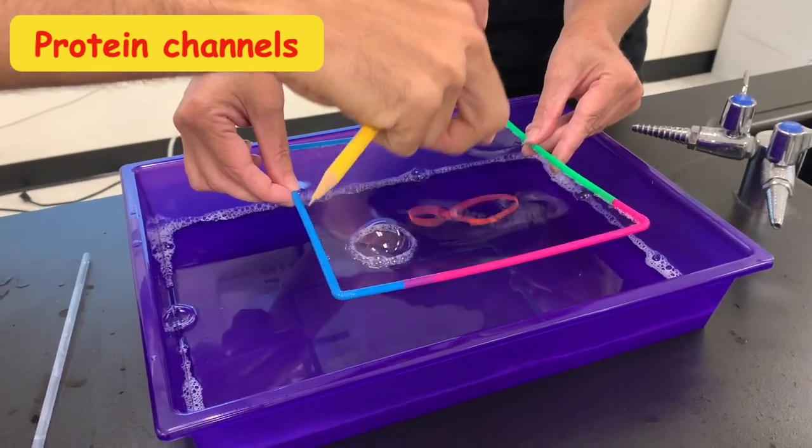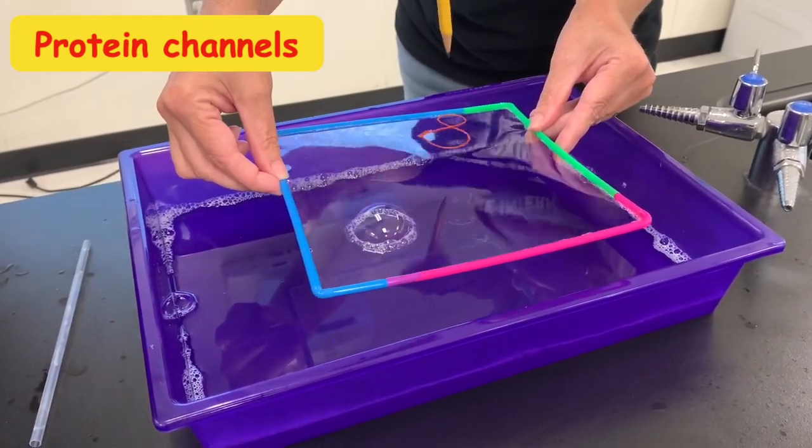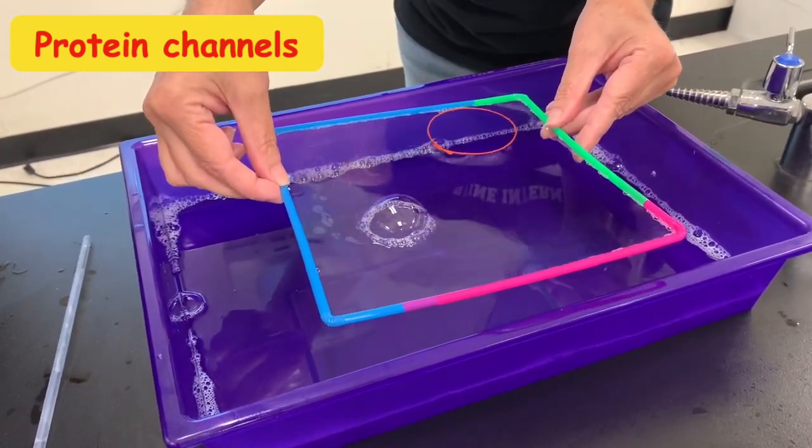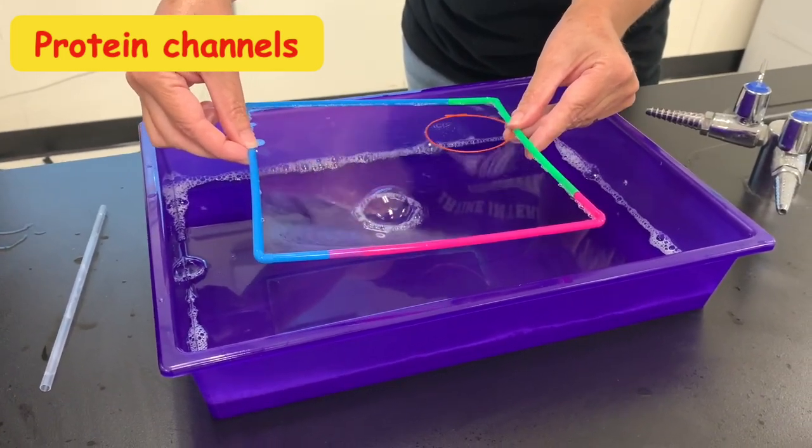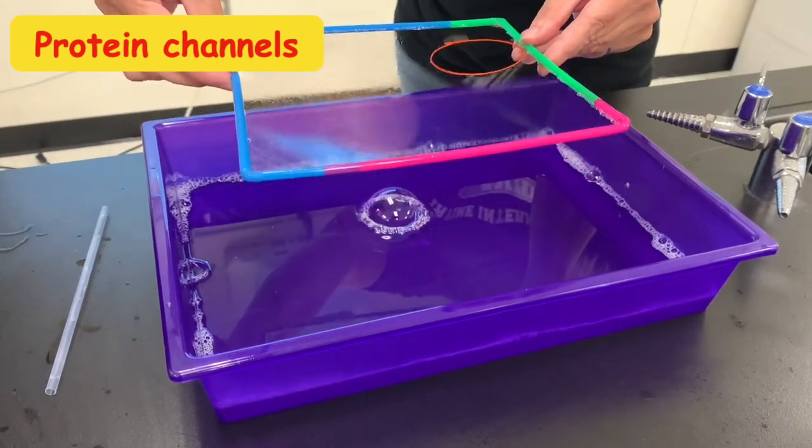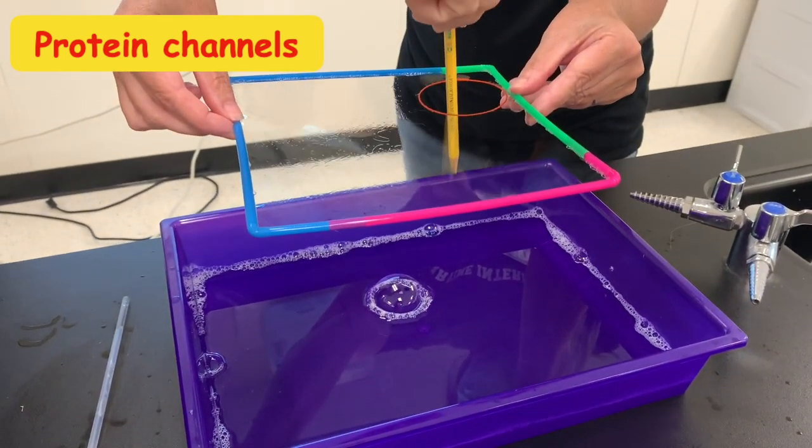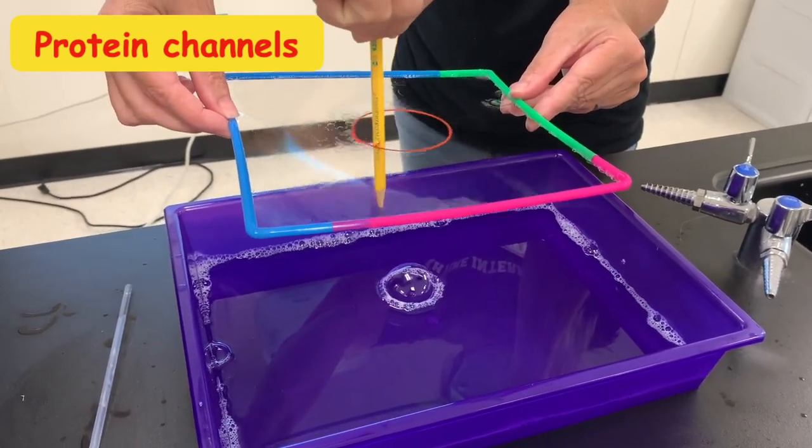I always like to save the protein channels ones for last because this is my all-time favorite. So if you use that circle that you made out of string and put it on the surface of the membrane, you can see if you poke it with a pencil, it can just float around as an open circle or like a protein channel that allows passage of material into or out of the cell.